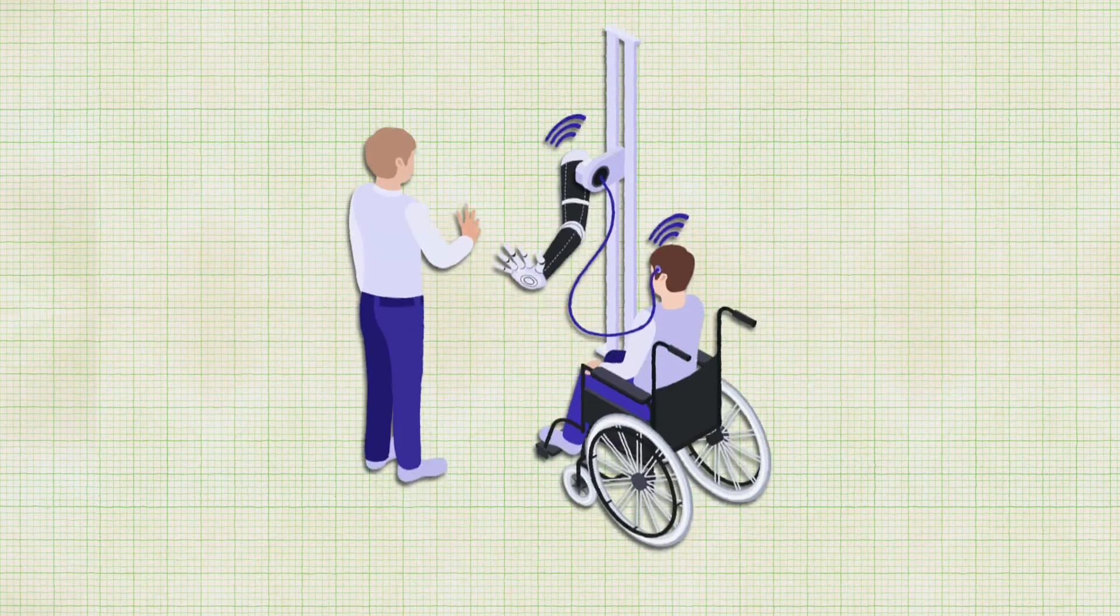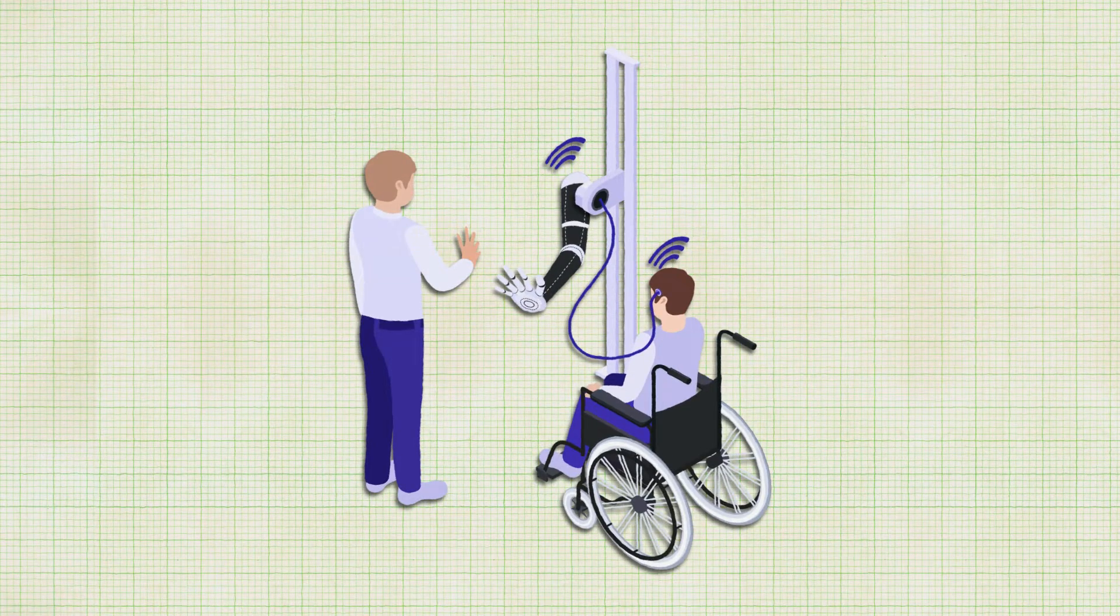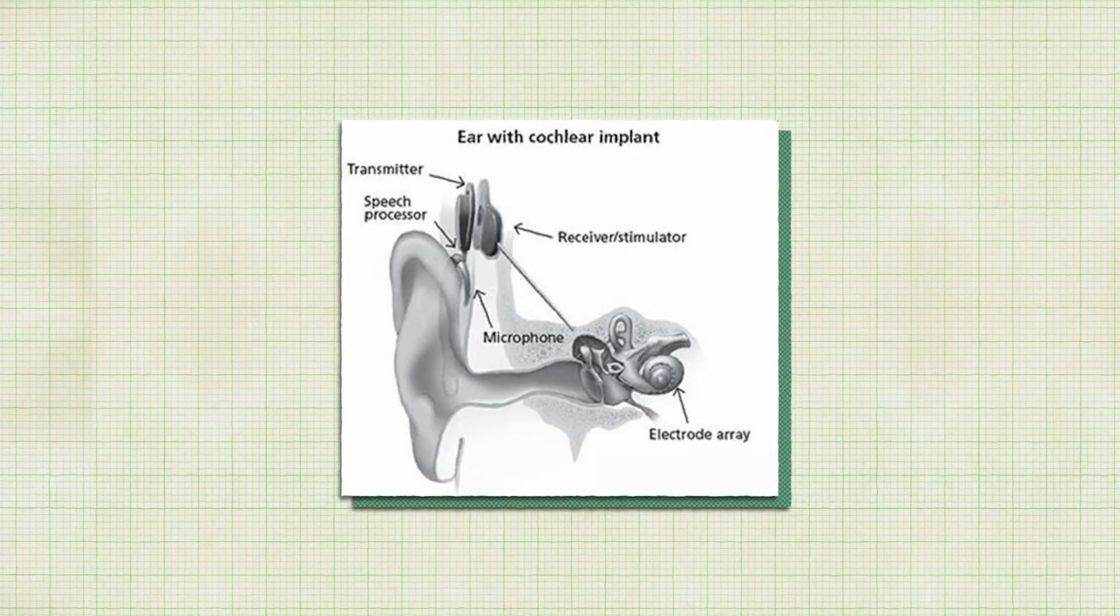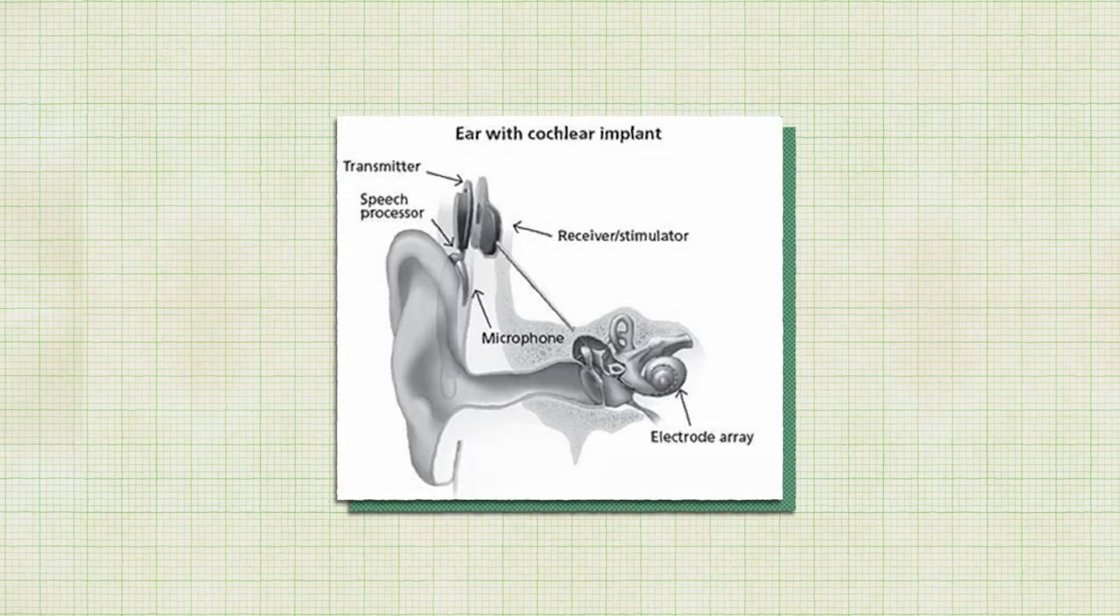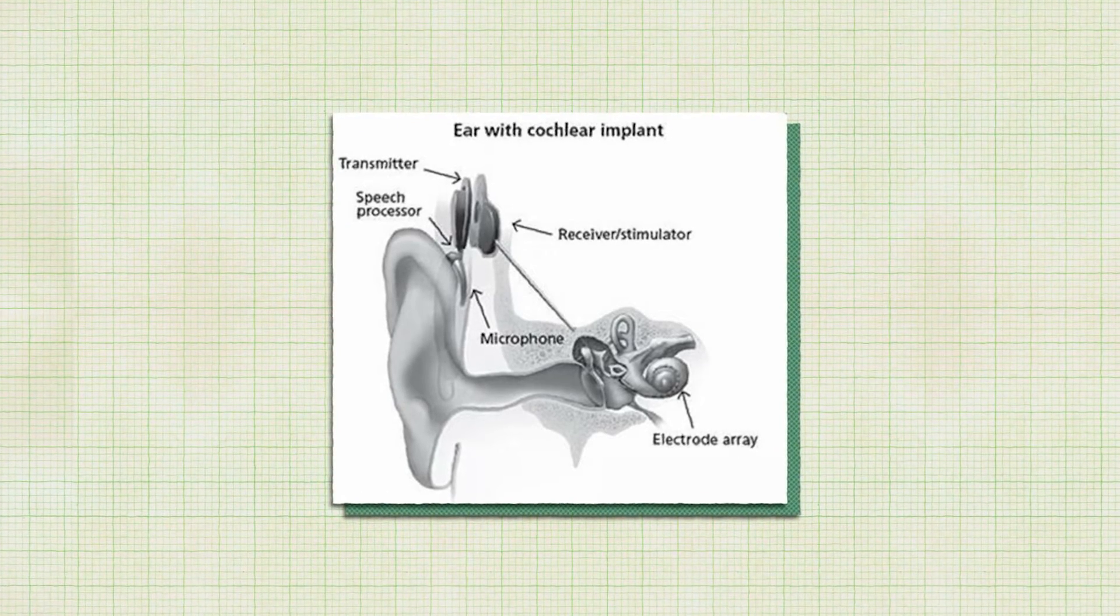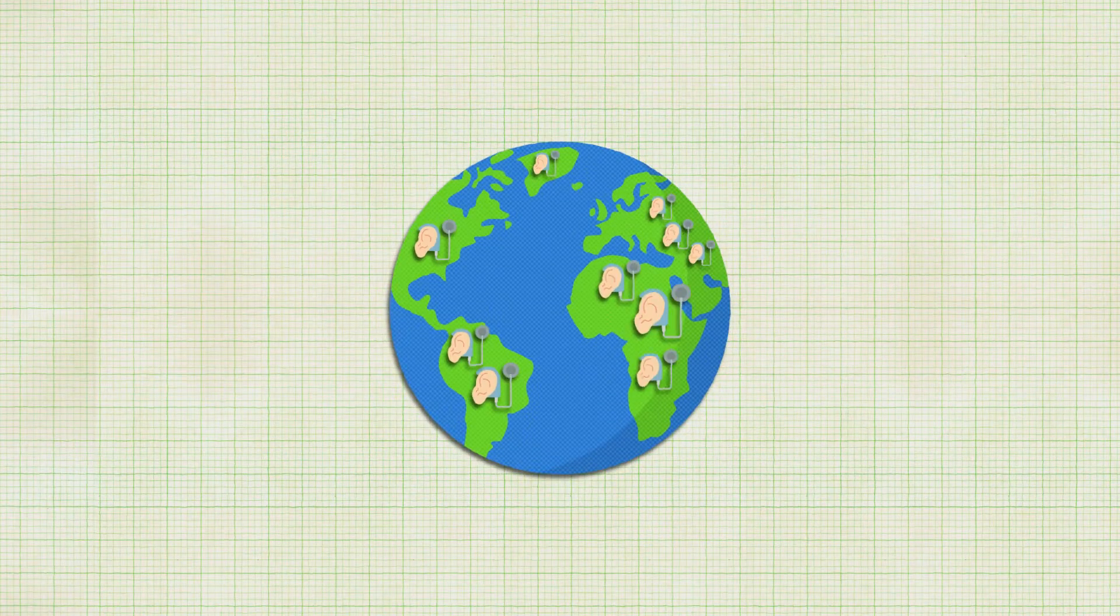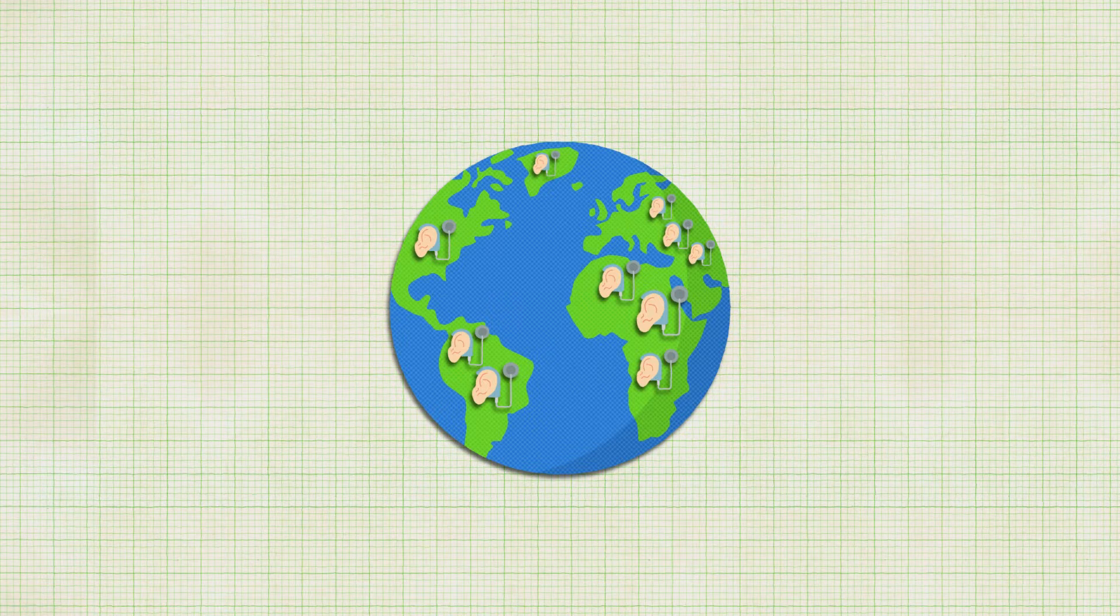Since then, scientists have developed a variety of solutions to help people with disabilities replace missing biological functions with machines. The most successful of these is the cochlear implant. Unlike hearing aids, which simply amplify sound, modern cochlear implants bypass the hearing mechanism in the ear and connect directly to auditory nerves. There are currently about 1 million people using cochlear implants in the world today.